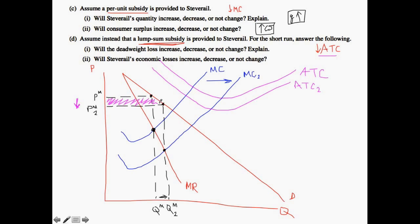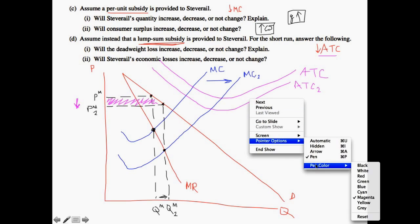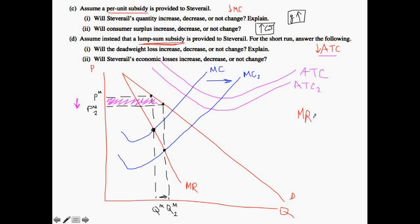In answering whether deadweight loss increases, decreases, or does not change, you need to think about that original circumstance of the monopolist setting marginal revenue equal to marginal cost. The marginal revenue and marginal cost curves are not changing, so Steve Rail will still set quantity at QM and price at PM. Therefore, this leads to no change in the overall deadweight loss. In a lump sum subsidy we see a change in average total cost going down, but no change in marginal cost, so QM and PM remain the same and there is no change in deadweight loss.